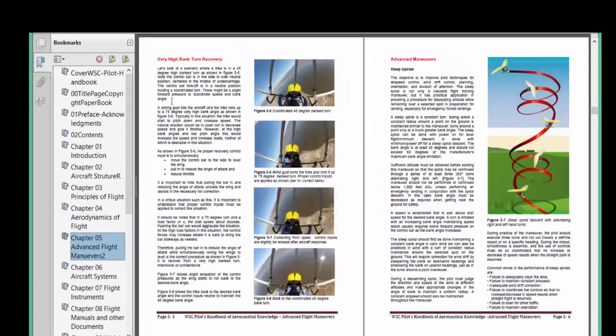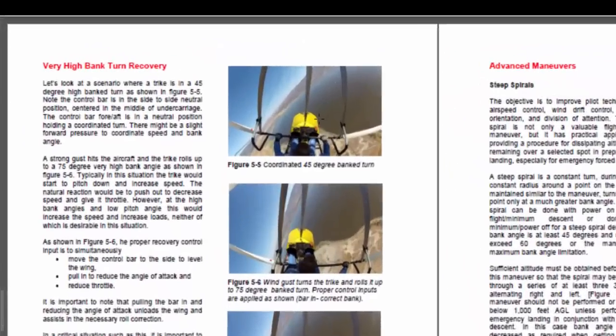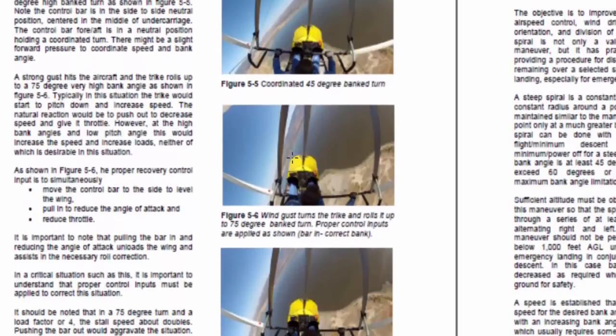Let's look at a situation here, a very high bank turn recovery, spiral recovery. We're in a 45 degree bank turn here, and let's just say we get some turbulence, distraction, anything that could create a higher bank angle here. Now, here we've gone to a higher bank angle. Two things have to happen. You need to pull the bar in to reduce the pitch angle, and at the same time, simultaneously, bring the bar over to level the turn. So, we're really accomplishing two things when we get into this high bank turn.